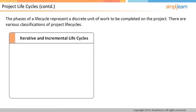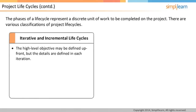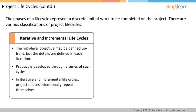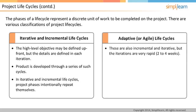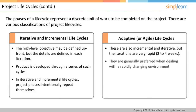Incremental and iterative lifecycles have a short upfront high-level definition and planning phase. The product is then developed through a series of iterations where each iteration increments or adds to the functionality by a little. All the activities are intentionally repeated in iterations. Adaptive or agile lifecycles are variants of incremental and iterative lifecycles where iteration is very short, typically two to four weeks. Agile methodologies are becoming very popular in the software development industry and in other industries where requirements are highly changeable and frequent feedback is beneficial.